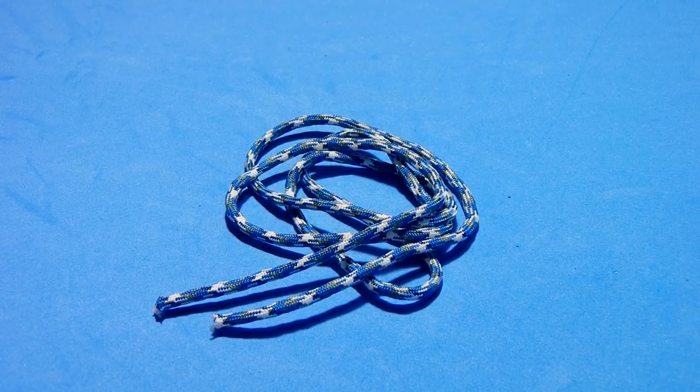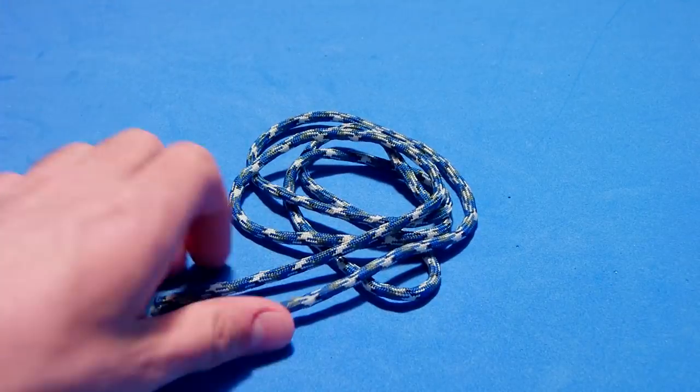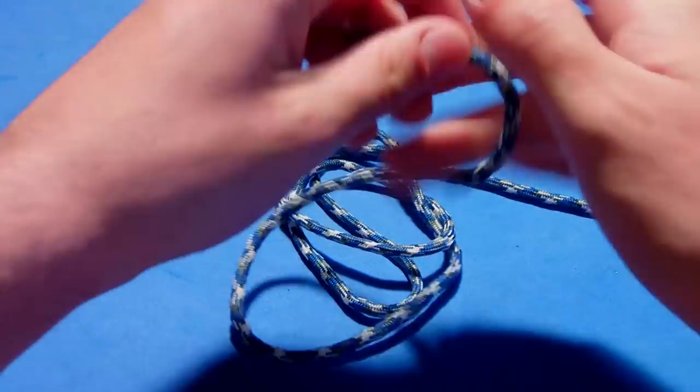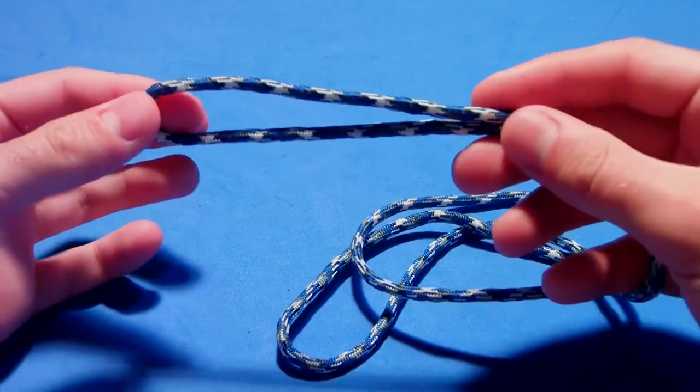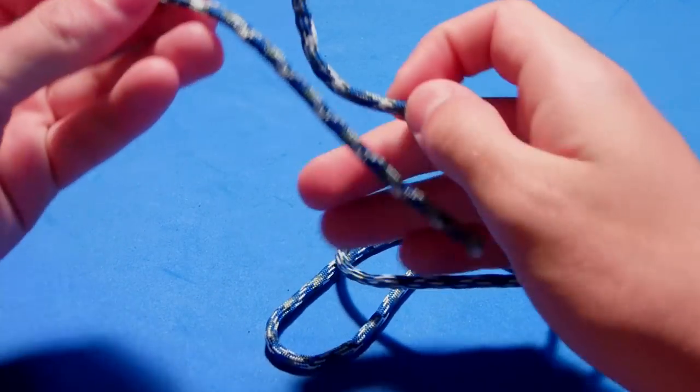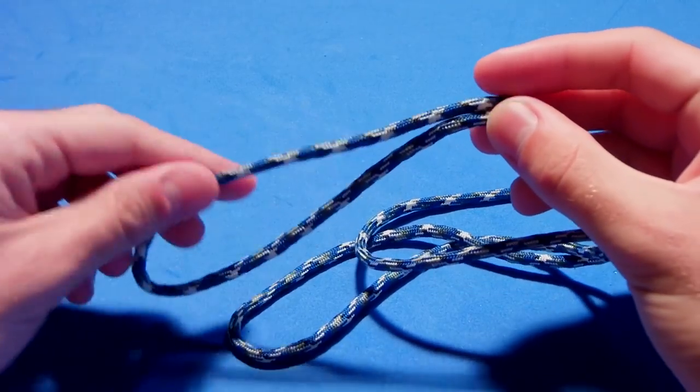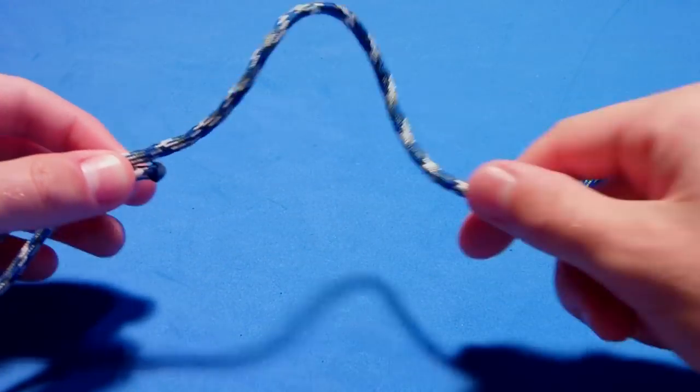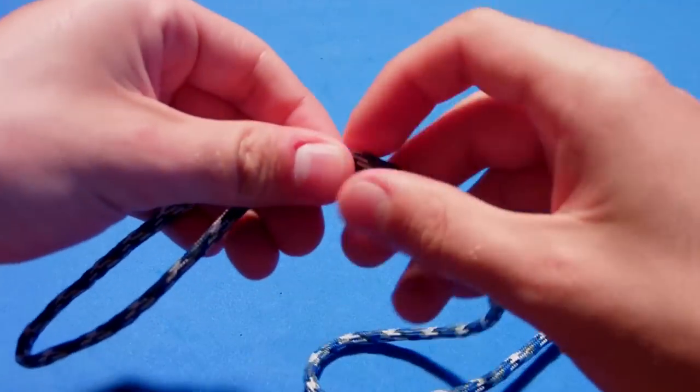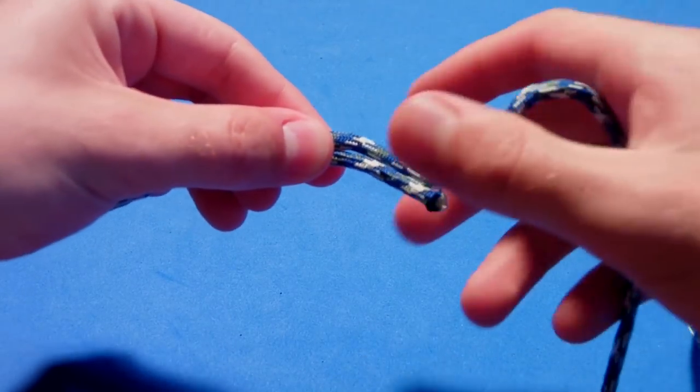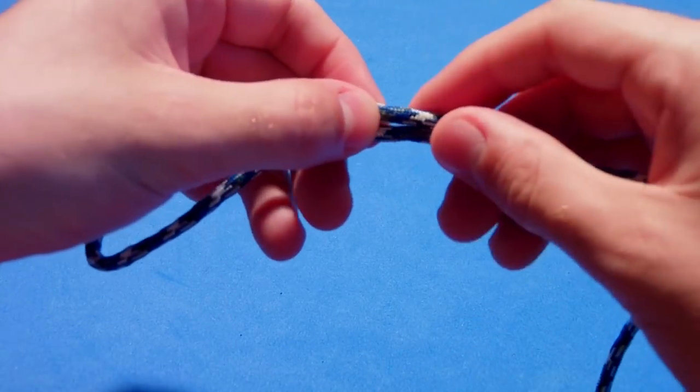To make this lanyard you will need around three feet of paracord. Grab one end, this end will tell you how long your lanyard will be. So this will be the length of your lanyard, hold it like this. Next, grab the longest end and go up at least one inch, or one and a half should be a little bit better.